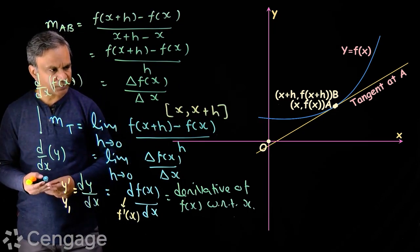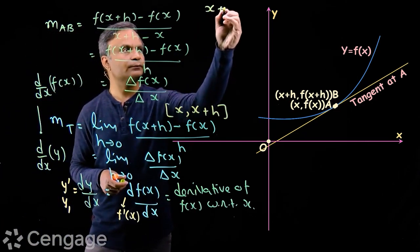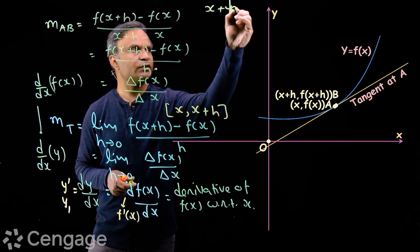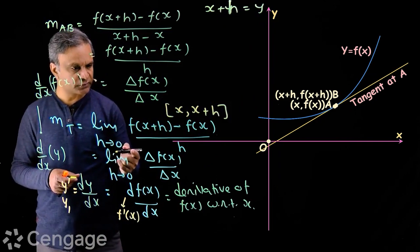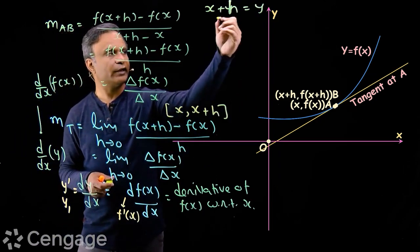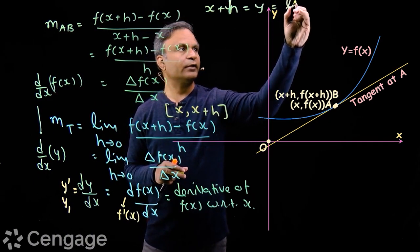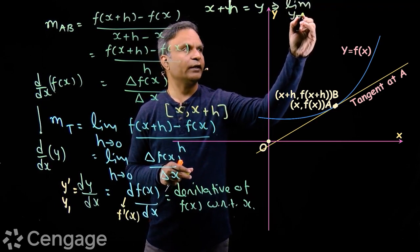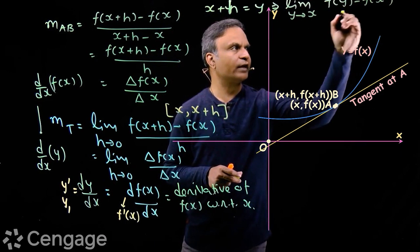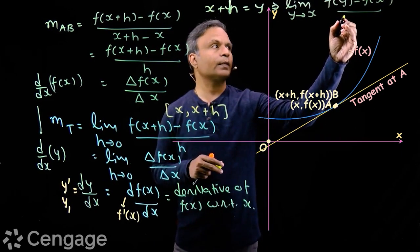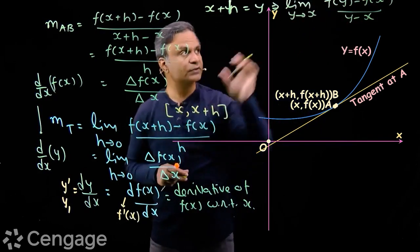Now, in this definition, if we replace x+h with y, then when h approaches 0, y will approach x. So this limit changes to: limit as y→x of [f(y) − f(x)] / (y − x). This is an alternate form of the first principle of derivative.